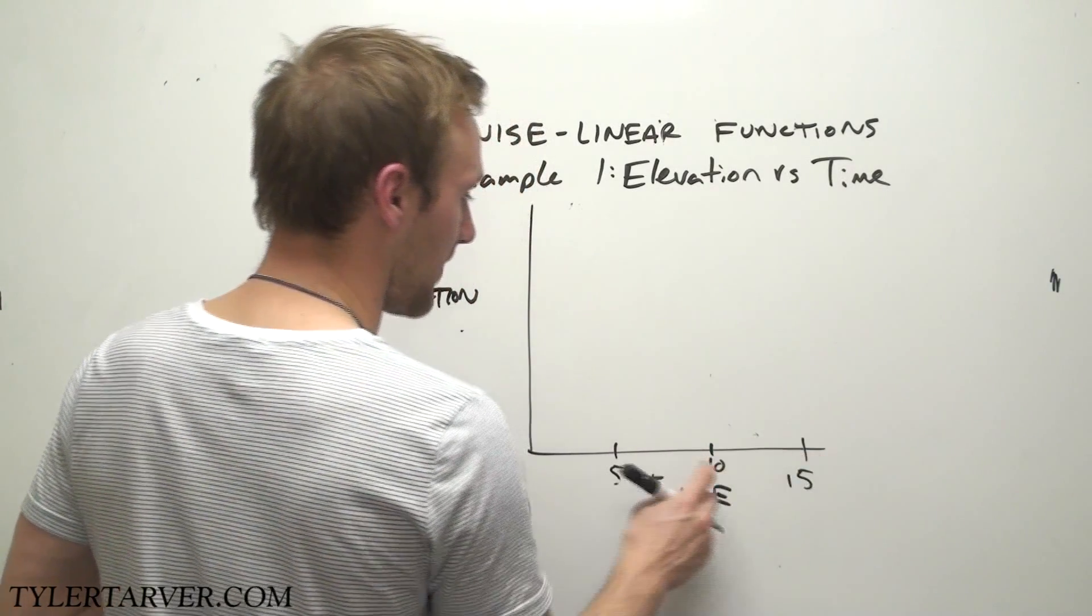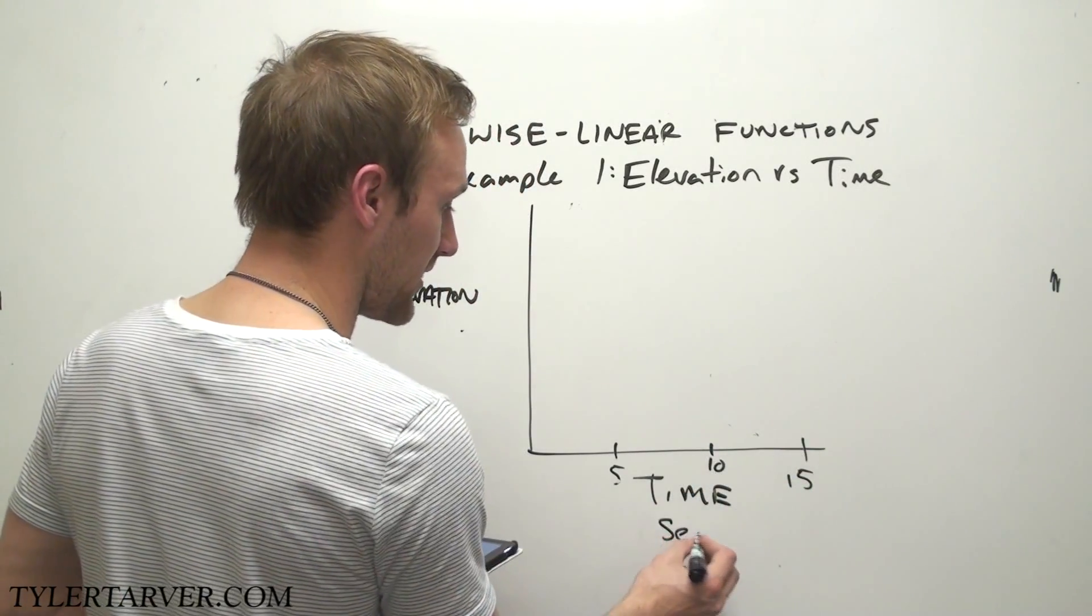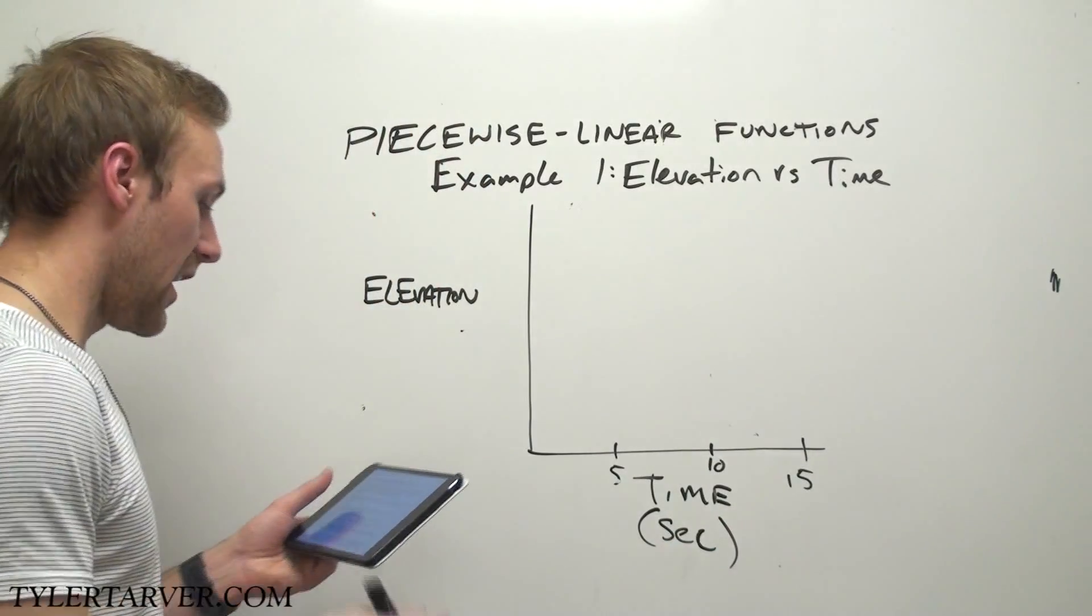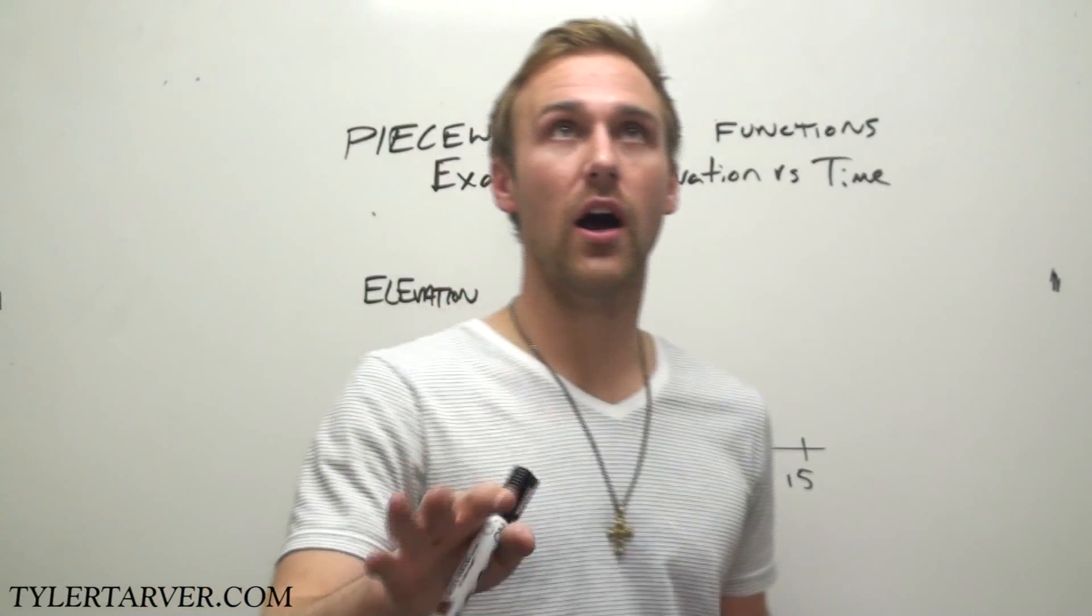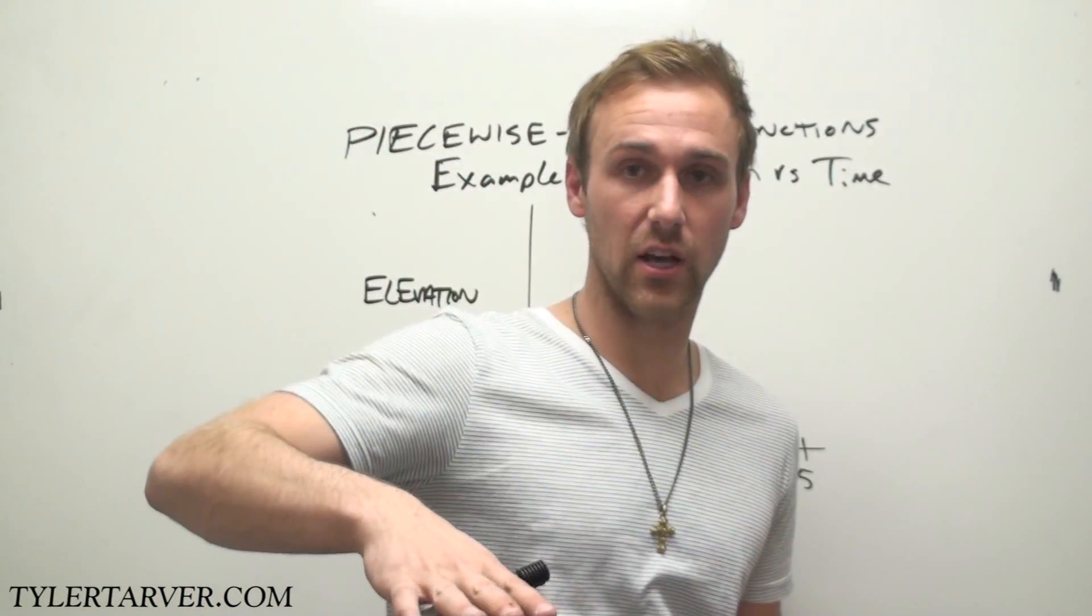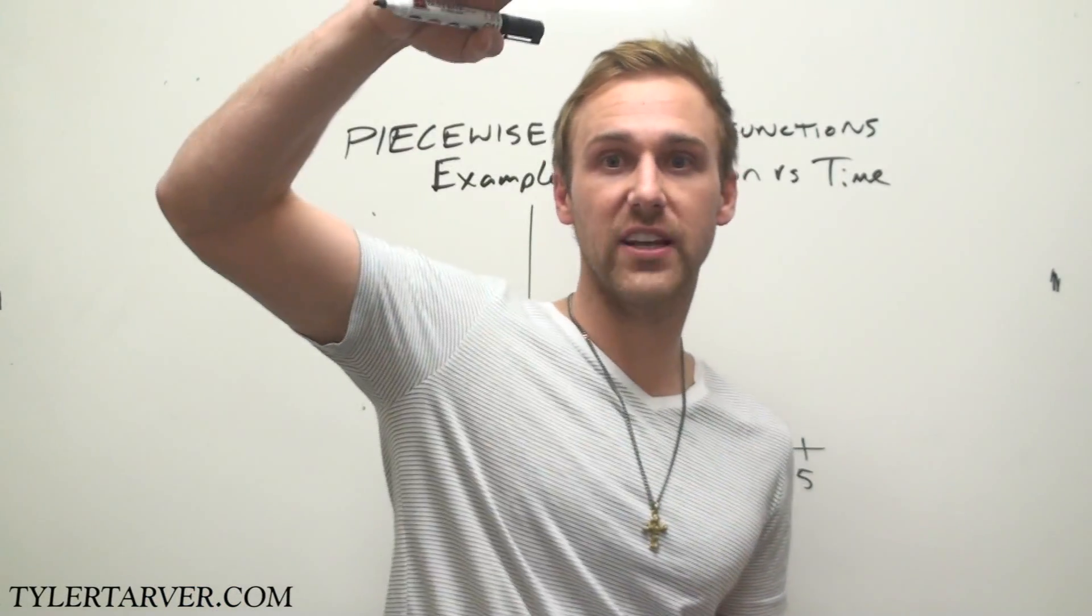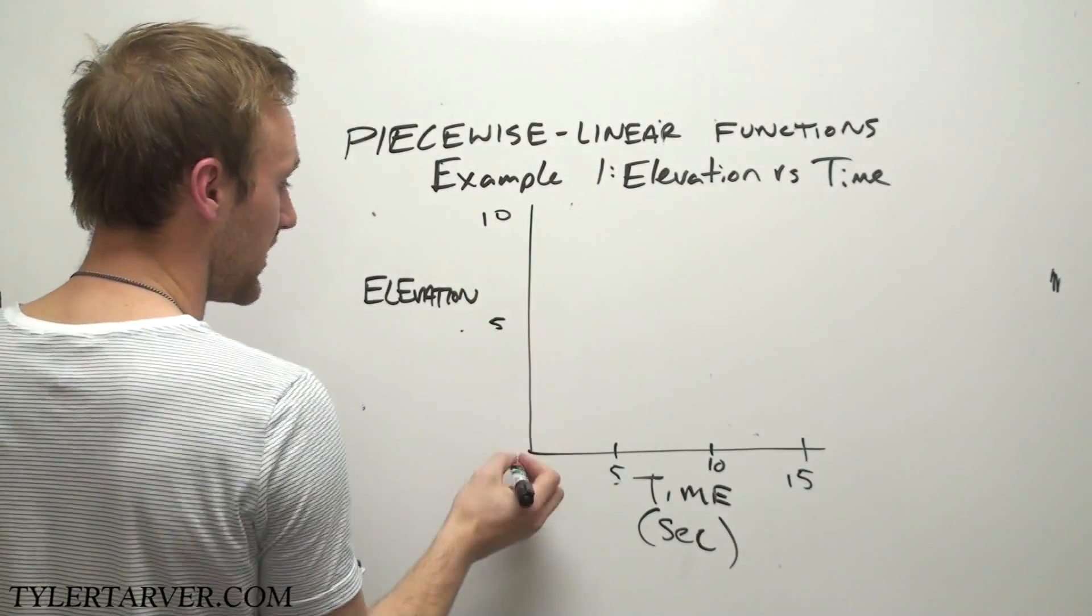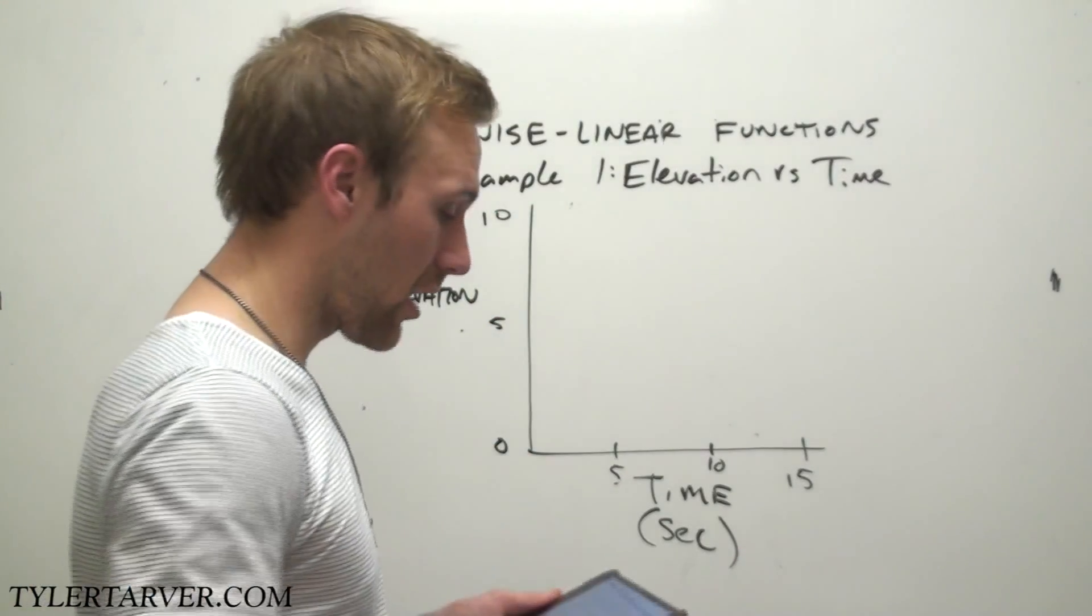Okay, so 5, 10, 15, and we know we're doing it in seconds so it doesn't hurt to label that as well. Now elevation. How high was it? He got 0 was the lowest because he stepped on the ground. 10 feet is the highest. So I can just do this at 10 feet, 5 feet, 0 feet. Cool?